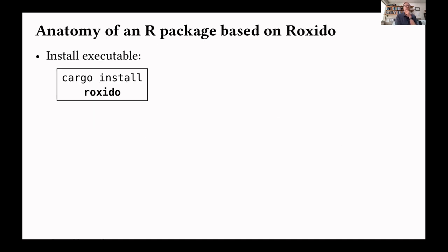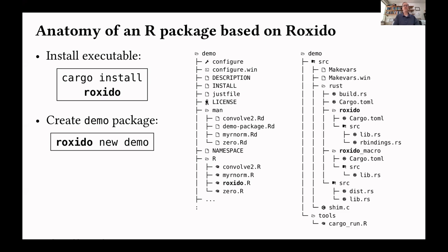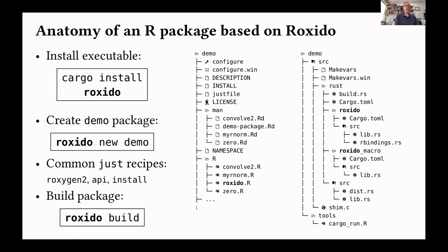We have an executable that you can install with cargo install roxido. That executable helps develop packages — you can say roxido new demo if you want to make a new package named demo. That creates a typical directory structure used in R, with a description file, which is the equivalent of Cargo.toml in a Rust project. We've embedded the roxido framework in the source directory of the package, and that's what does all the magic of interfacing R and Rust. We use Just to provide nice recipes, like making documentation, viewing the API, or installing the package. You can also say roxido build to make a package ready to ship to CRAN, including vendoring all of the dependencies.